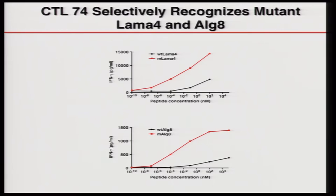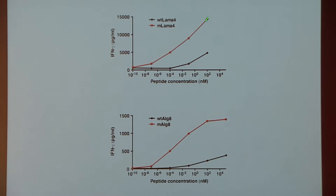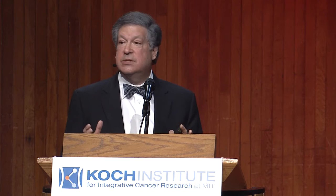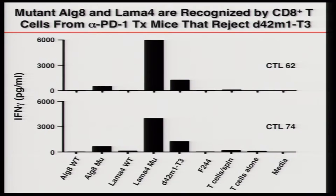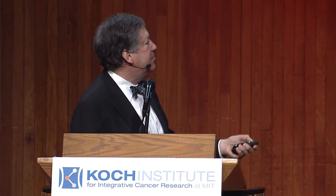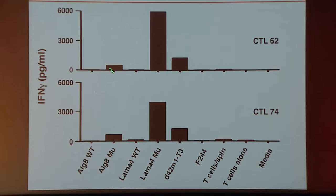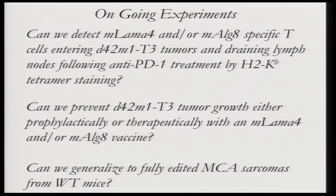We went back and took the wild-type versus mutant sequences and repeated these stimulations. You can see mutant Lama-4 in red versus wild-type, and mutant ALG8 in red versus wild-type, with about 1 nanomolar EC50 — so these are reasonably high-affinity peptides whose specificity for these T-cells is revealed by anti-PD-1. We then compared CTL-74 with a second T-cell line generated from a second mouse, and you get almost precisely the same pattern with the same relative levels of stimulation between each of these peptides. So we're very excited about this because it looks like we're on the right track.